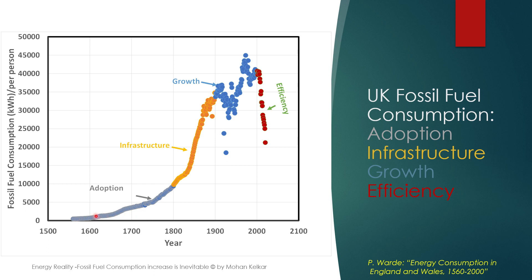You can see that the fossil fuel consumption goes through four stages. The first stage is adoption, where people are getting accustomed to a new fuel. In the United Kingdom, that adoption period was quite long because it was the first country to start using fossil fuel. Then there is an infrastructure period where the necessary infrastructure was built so that everyone can take advantage of fossil fuel. In England, it lasted for 100 years.